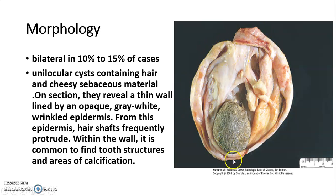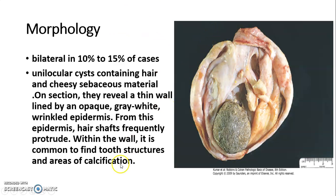Teratomas are cystic tumors filled with pultaceous, paste-like material. You can also see structures such as skin, cartilage, bone, and tooth.